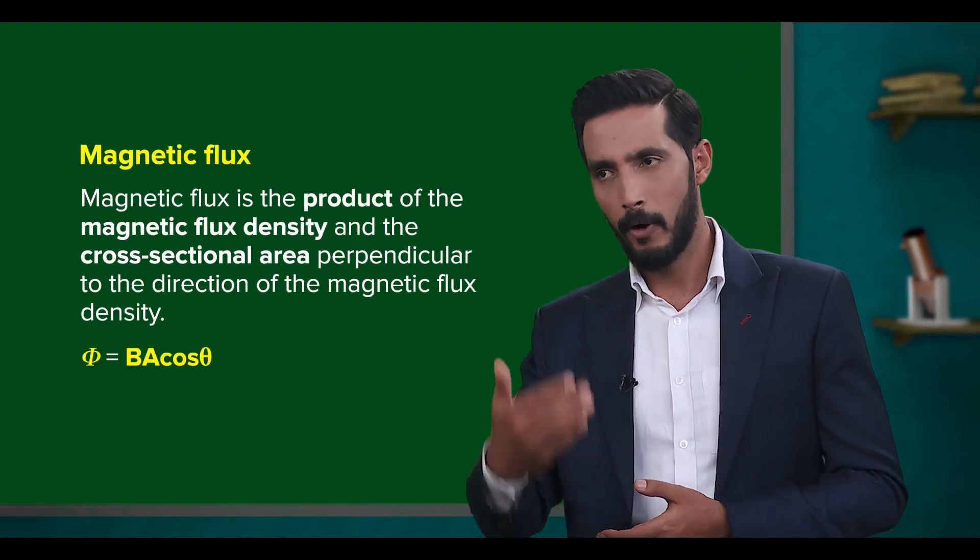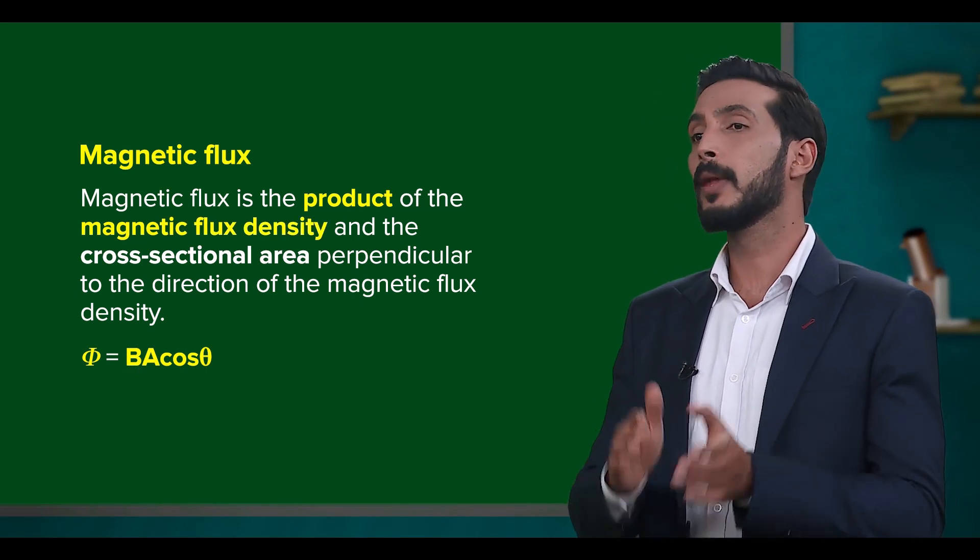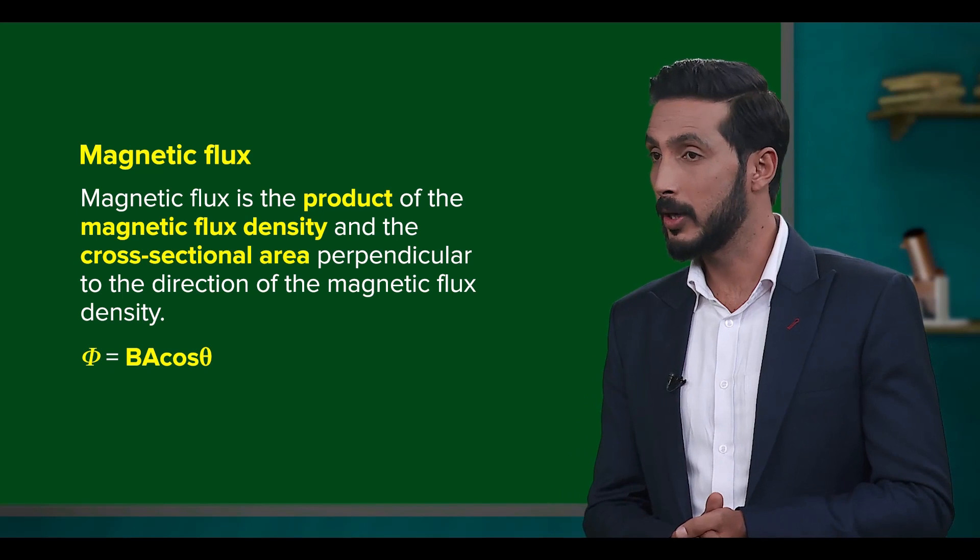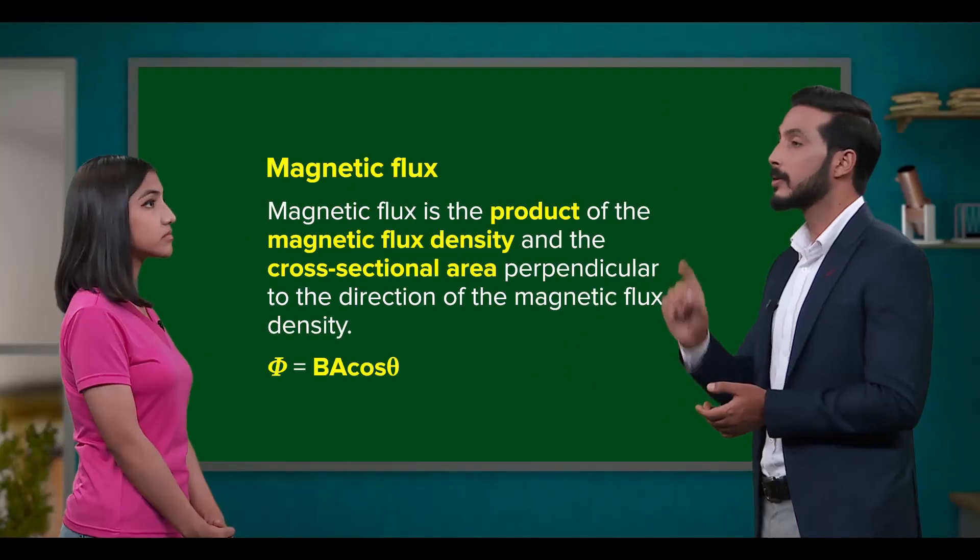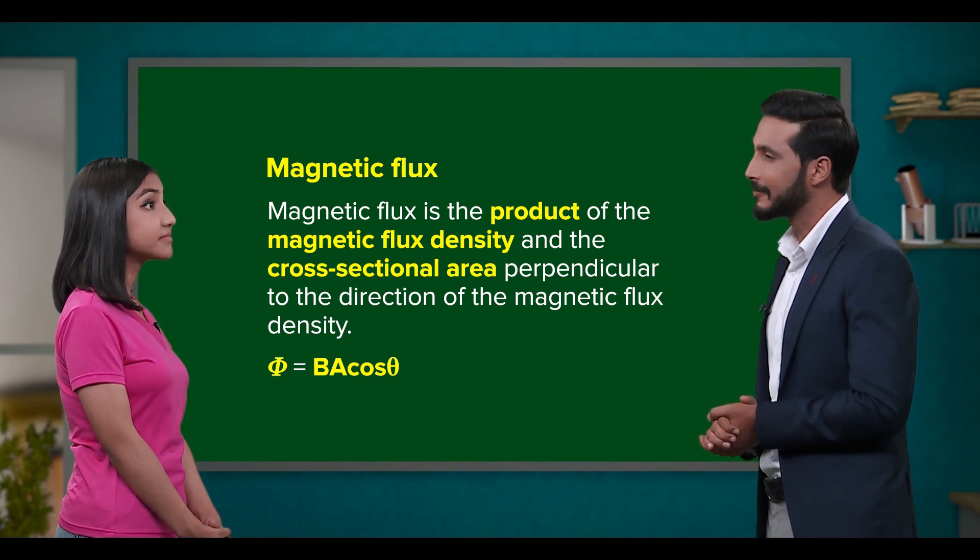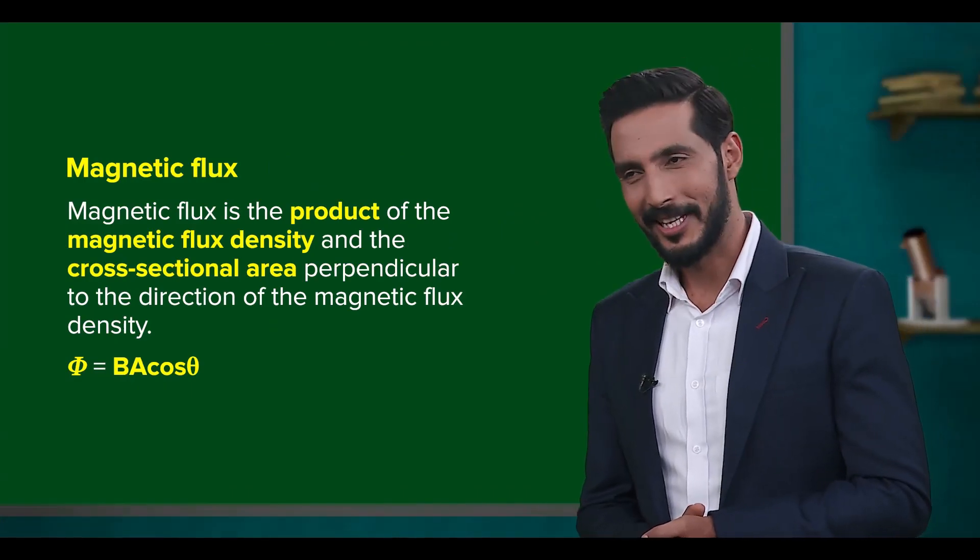Yep. Now, how do we quantify this fact? We do that by using the formula: magnetic flux is equal to product of the magnetic flux density and the cross-sectional area perpendicular to the direction of the magnetic flux density. Symbolically, magnetic flux is denoted by the Greek letter phi. That's quite easy to understand.